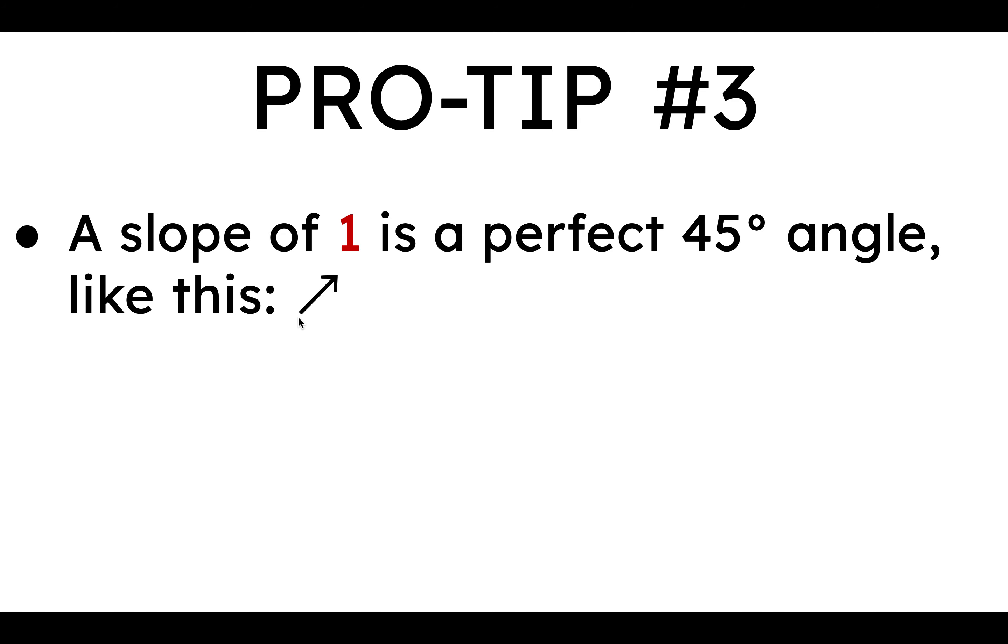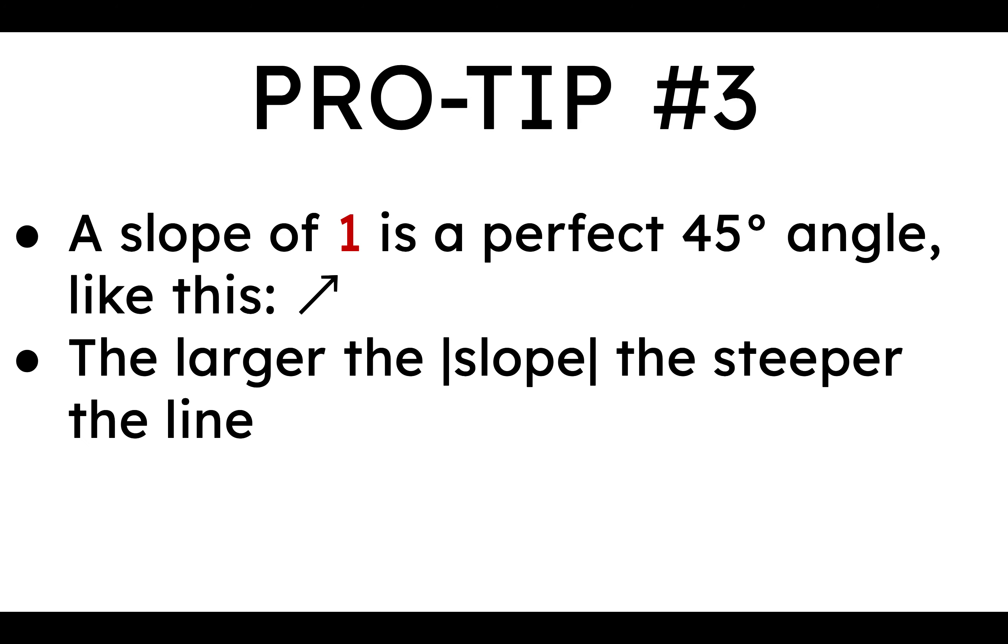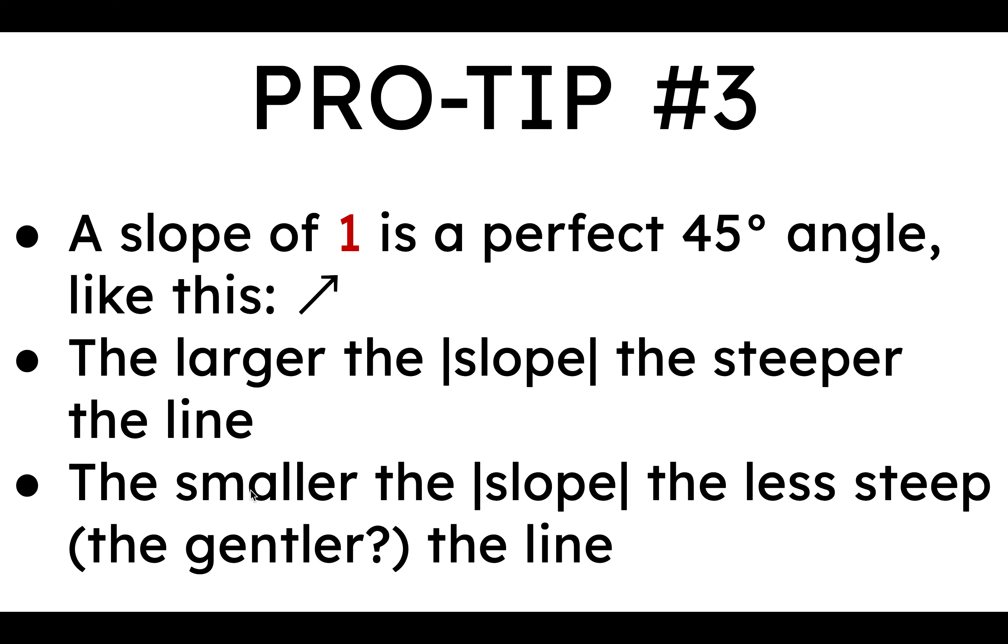You can recognize it because it looks like a 45 degree angle. So the larger the slope, the steeper the line. I kind of snuck these absolute values in here just to make it mathematically correct. You don't have to worry about that. But basically, if you have a slope of 2 or 4 or a million, it's going to get steeper and steeper and steeper and closer and closer to a straight up and down slope.